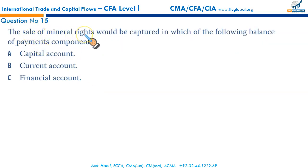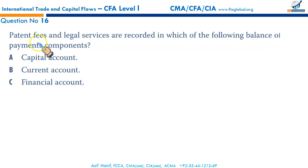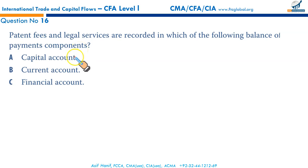The sale of mineral rights would be captured in the capital account of the balance of payments. The capital account measures capital transfers and sale and purchase of non-produced, non-financial assets such as mineral rights and intangible assets. Patent fees and legal services, however, are recorded in the current account, because the current account captures flows of goods and services and income from foreign investment — so that's B.